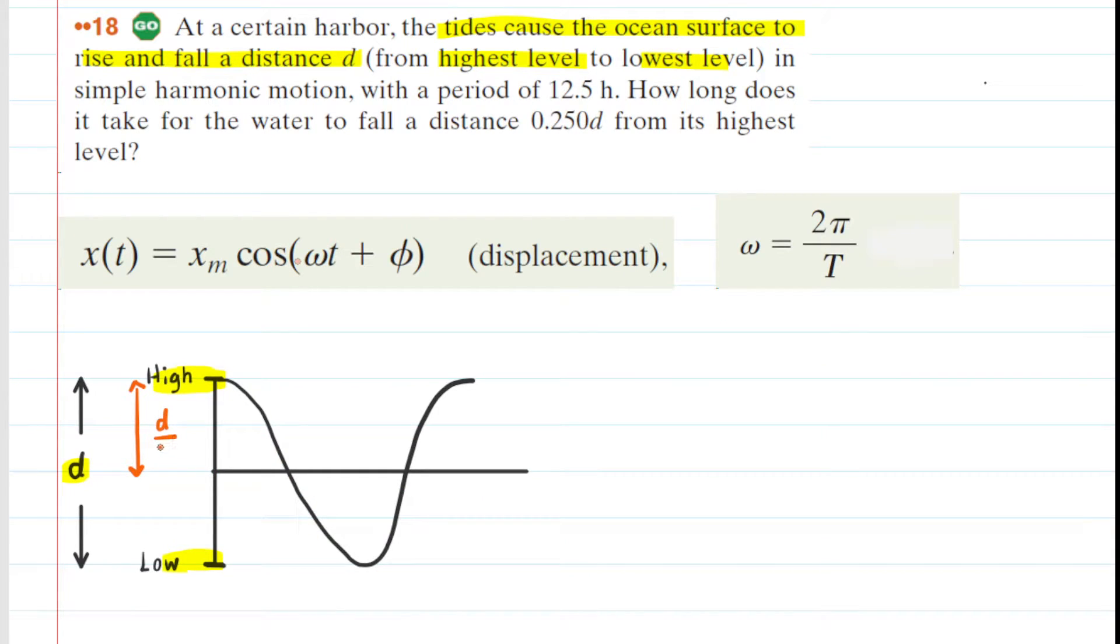So we're going to label that d divided by 2, and what we've just stated is that the amplitude, x sub m, is going to equal d divided by 2.